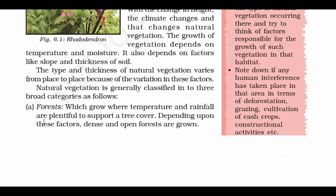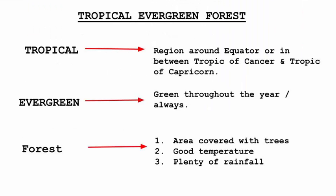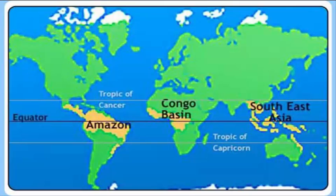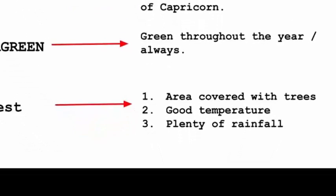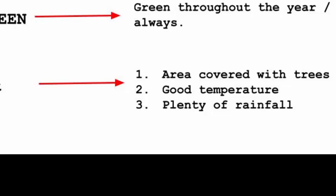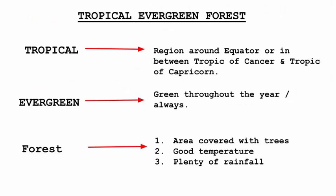A place with good temperature and plenty of rainfall is ideal for a forest to evolve. Forests are simply huge areas covered with trees. Depending on how dense and open the forests are, we divide them into different categories. First: Tropical Evergreen Forest. Let's break the words down. Tropical refers to the region around the equator, between the Tropic of Cancer and Tropic of Capricorn. Evergreen means it stays green throughout the year. So a tropical evergreen forest is one that is green all year and found near the equator.